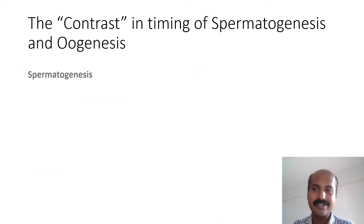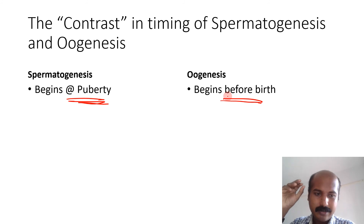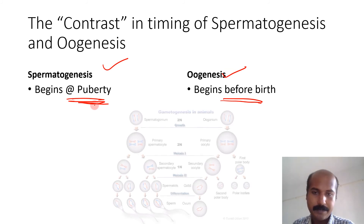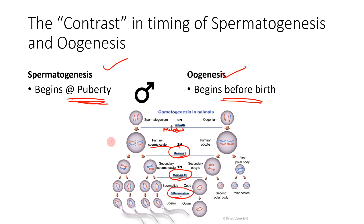To summarize the contrast: spermatogenesis begins at puberty, while oogenesis begins before birth — because the definition of each starts from the respective gonial cell. In spermatogenesis, spermatogonium undergoes growth and mitosis to form primary spermatocytes, which undergo meiosis one to form secondary spermatocytes, then meiosis two to form spermatids, which differentiate into spermatozoa. This is a straightforward linear process.